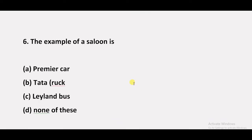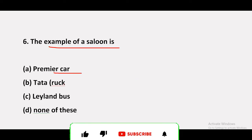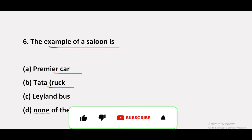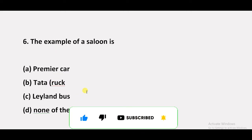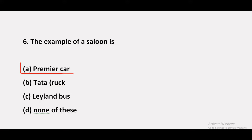Question 6: The example of a saloon is — option A: Premier car, option B: Tata truck, option C: Leyland bus, option D: none of these. The answer is Premier car — that is a very outdated car.